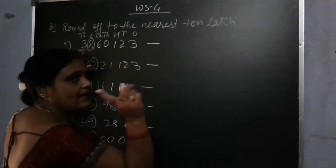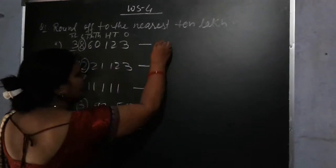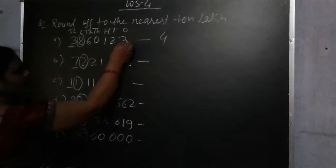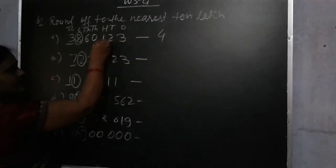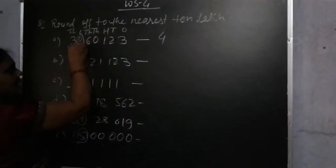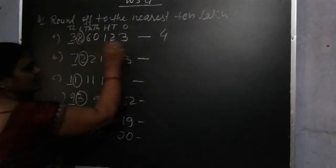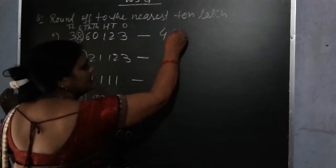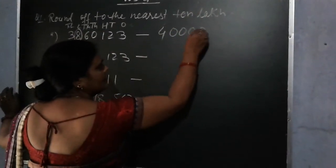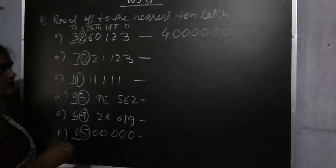So we add 1 to the 10 lakh place digit. 3 plus 1 equals 4. That place — 1, 10, 100, 1000, 10,000, lakh — means there are 6 digits, so you put 6 zeros.